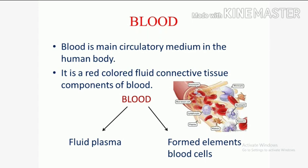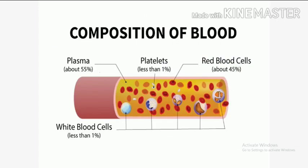The two components are: fluid plasma, and formed elements which are blood cells. Composition of blood: Plasma is about 55%, platelets less than 1%, red blood cells about 45%, and white blood cells less than 1%.